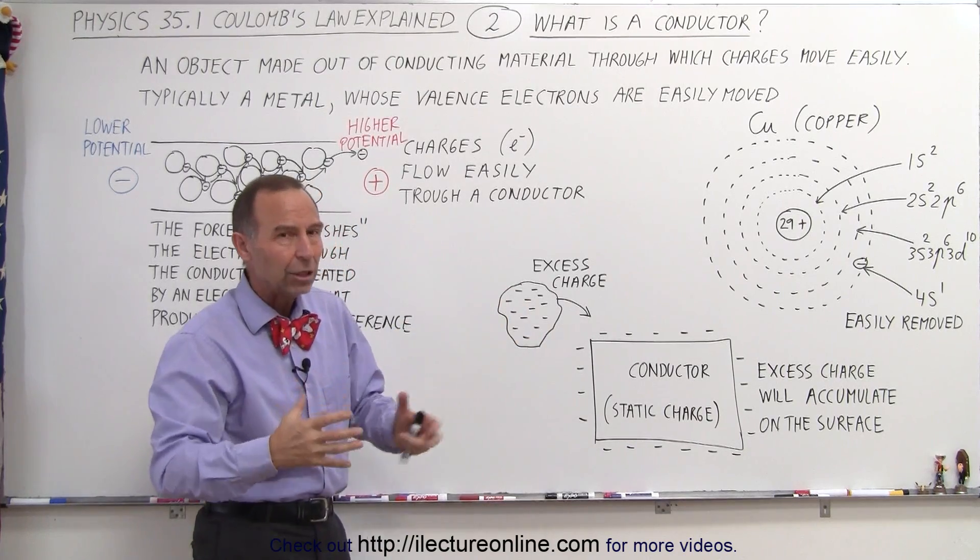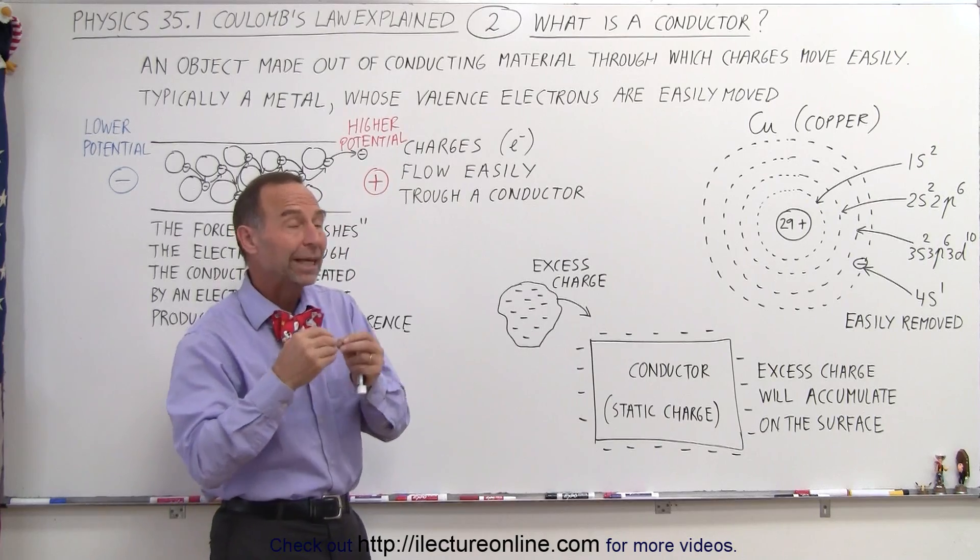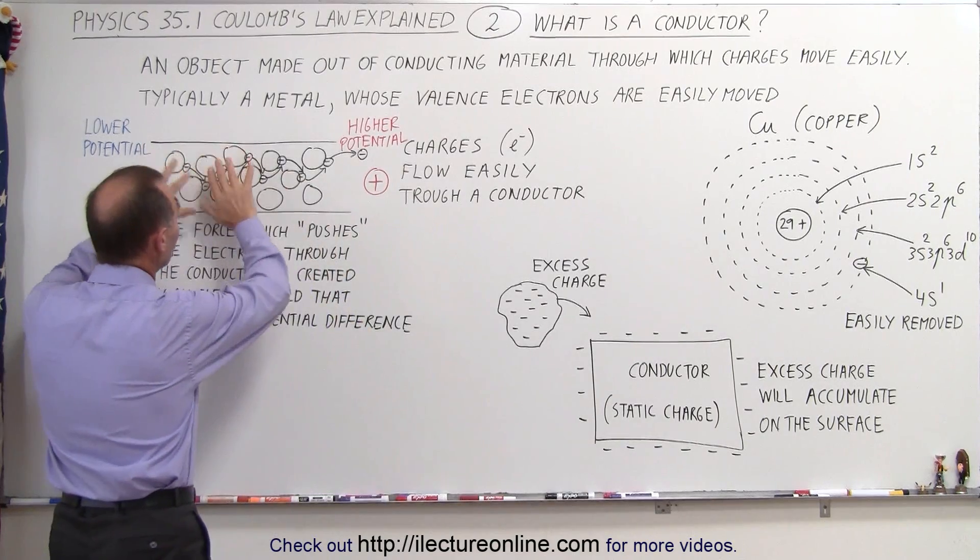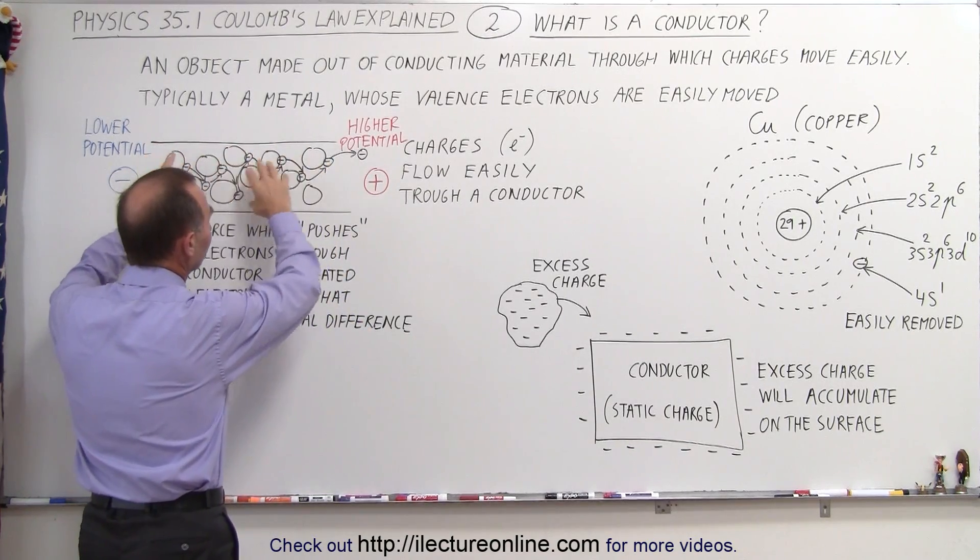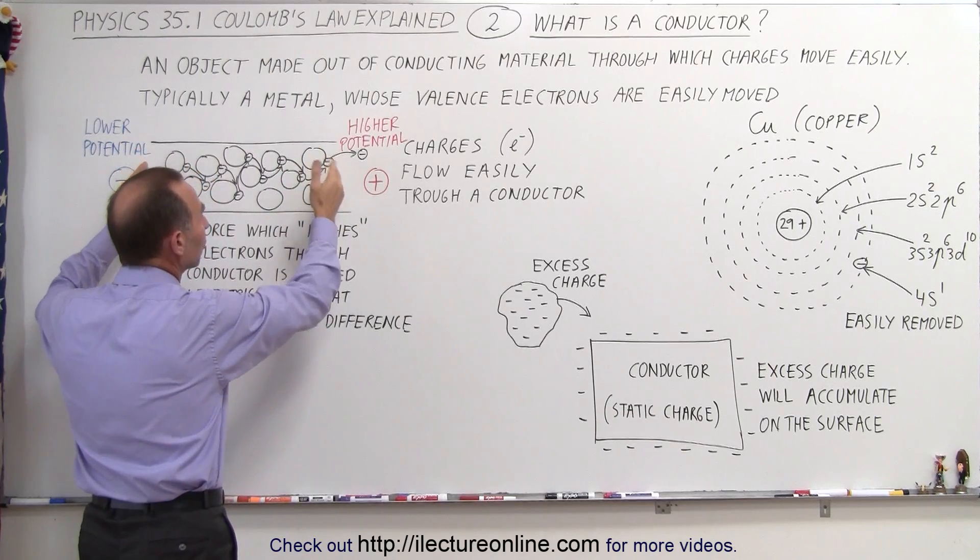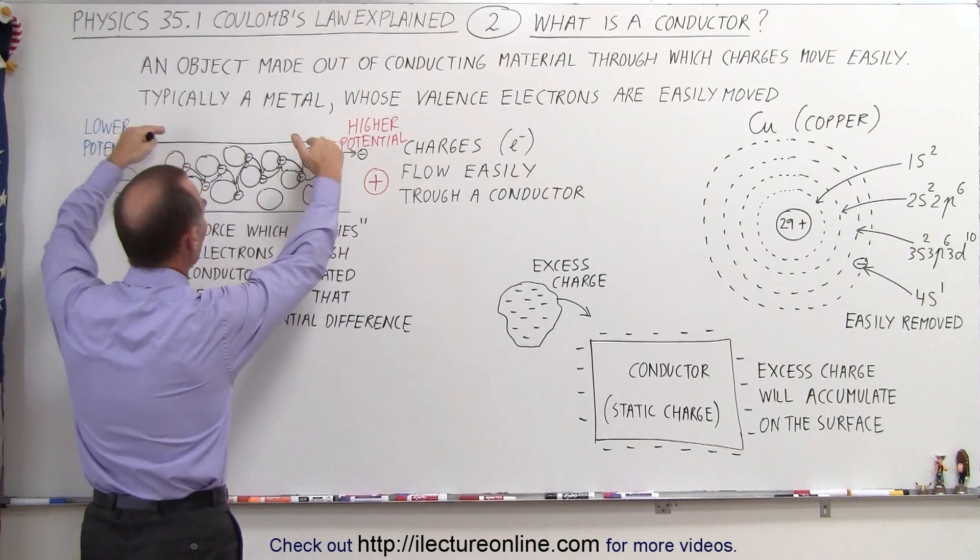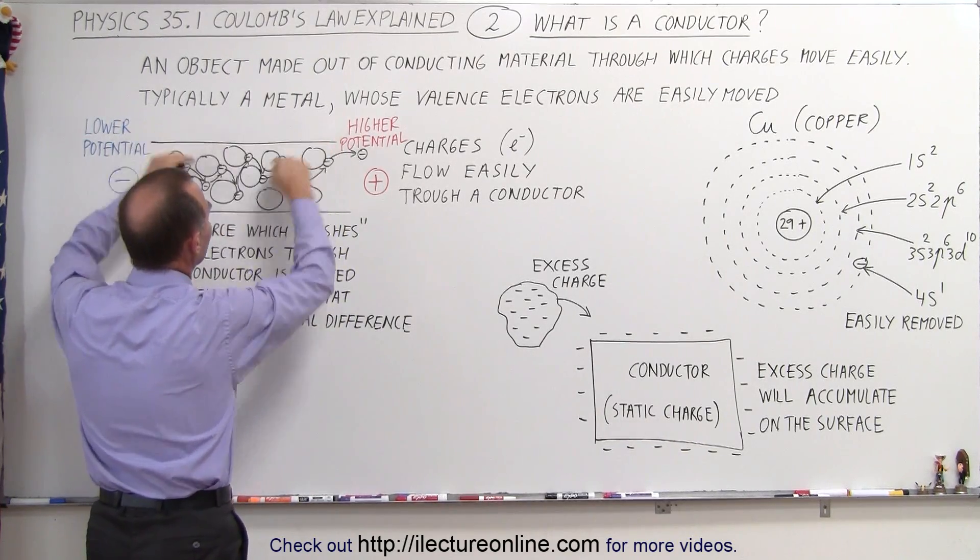Now, once the charges begin to move, then the charges will distribute themselves throughout the conductor as they're moving. When the movement stops, the current stops, the charges, the excess charges, will then again instantly go to the far edges of the conductor, the surface of the conductor.